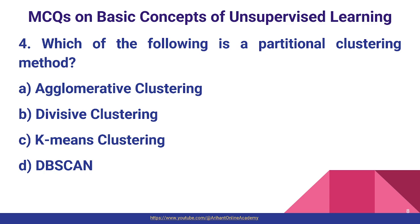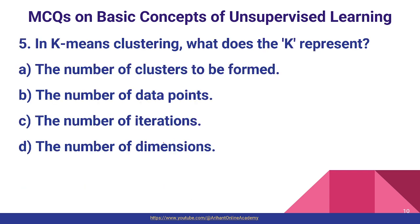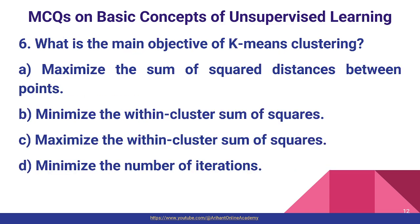Question number four: which of the following is a partitional clustering method? Partitional means k-means clustering — we call k-means clustering partitional clustering, so option C. Question number five: in k-means clustering, what does k represent? The number of clusters to be formed — option A is correct. K is simply how many clusters we have to form.